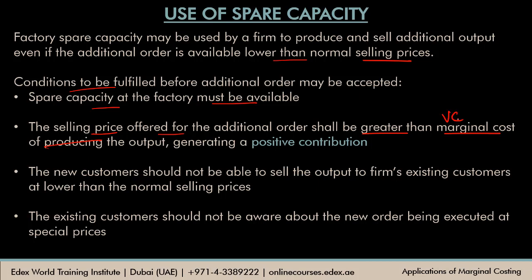Marginal cost is nothing but the variable cost — whatever additional cost you incur every time a product is produced. The selling price offered should be at least higher than that variable cost; it may be lower than your normal selling price, and that's okay. When the selling price is greater than the variable cost, it leads to a positive contribution for the firm whenever output is sold. We are always focusing on positive contribution when making decisions using the marginal costing concept.